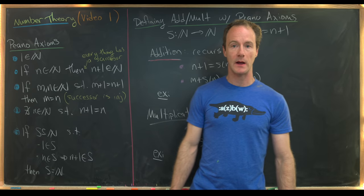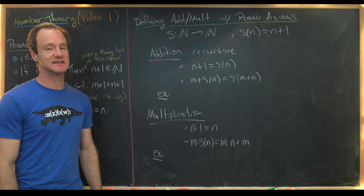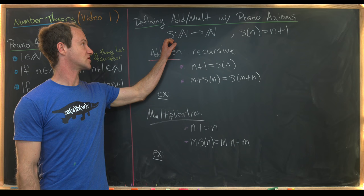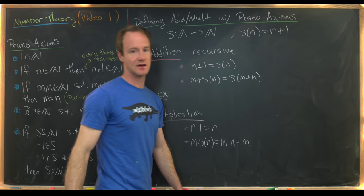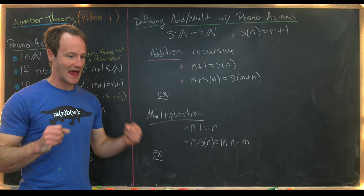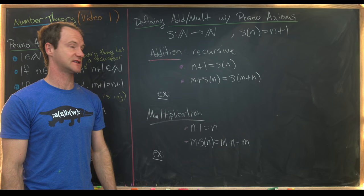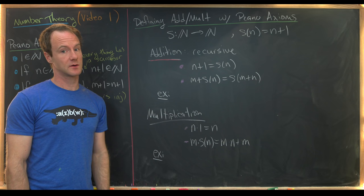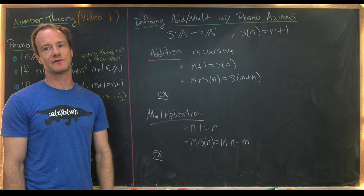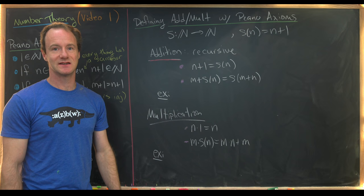We can actually define addition and multiplication via these axioms. We start with the successor function — a function s from N to N defined by s(n) = n + 1. We don't yet know how to add or multiply natural numbers, but what we do know how to do is get to the next natural number via the successor function. So we can't do something like five plus four yet, but we can find the number after five, which is obviously six. If we can find the next number, we can actually define addition and multiplication recursively.